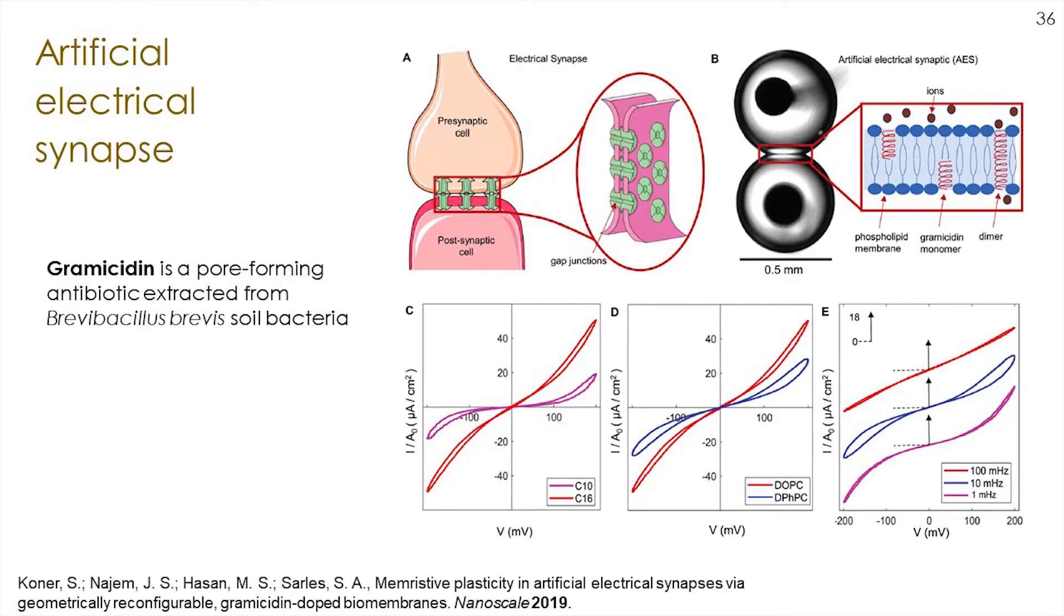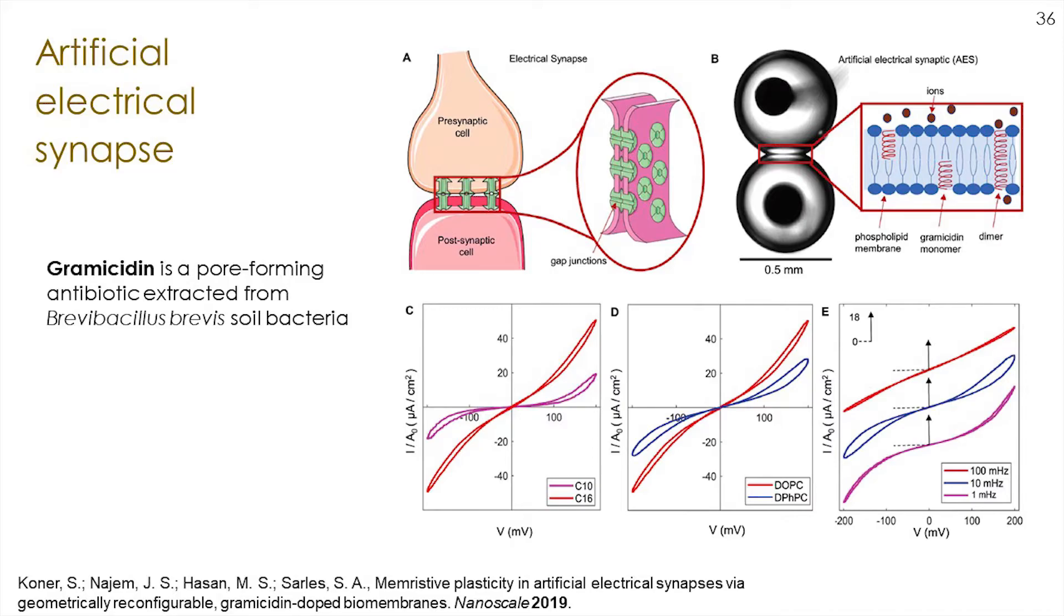We've been working with folks at Oak Ridge National Lab who do computing. They took properties of our model and put it in simulations to see if you built a salad dressing based computer, what could it do. They connected six or seven of these synapses together and showed it could do classical machine learning applications. You could show it images of flowers and it could classify the flowers as iris types. These soft nonlinear devices did it better than some prior systems they had used.